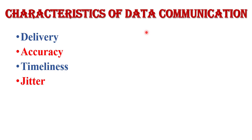Now the characteristics of data communication. The effectiveness of any data communication system depends on the following fundamental characteristics. First is delivery — the data should be delivered to the correct destination and correct user. Next is accuracy — the communication system should deliver the data accurately without introducing any error; data may get corrupted during transmission. Next is timeliness — audio or video data has to be delivered in a timely manner without any delay; such delivery is called real-time data transmission. Next is jitter — it is the variation in packet arrival time; uneven jitter may affect the timeliness of the data being transmitted.